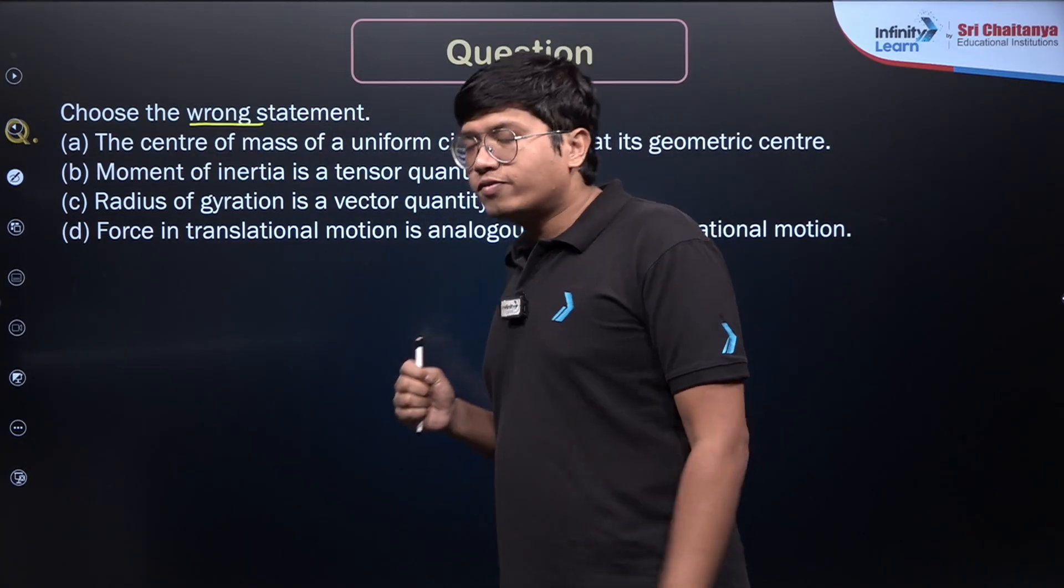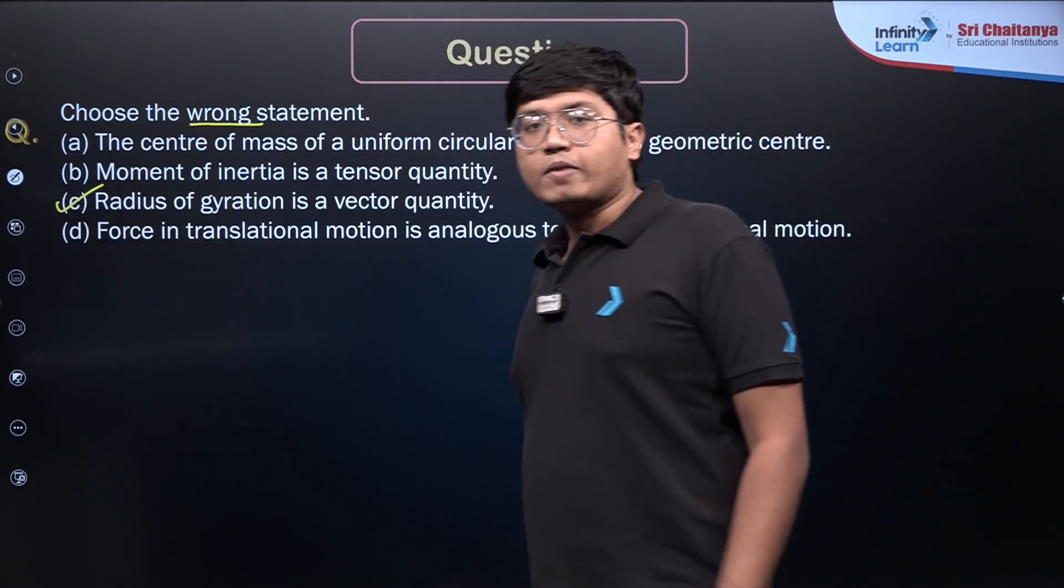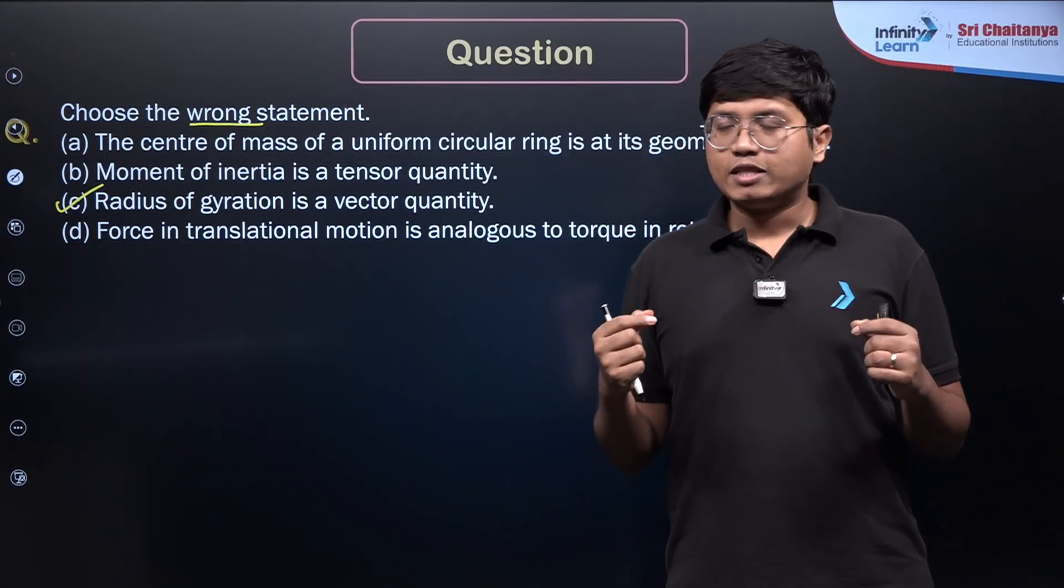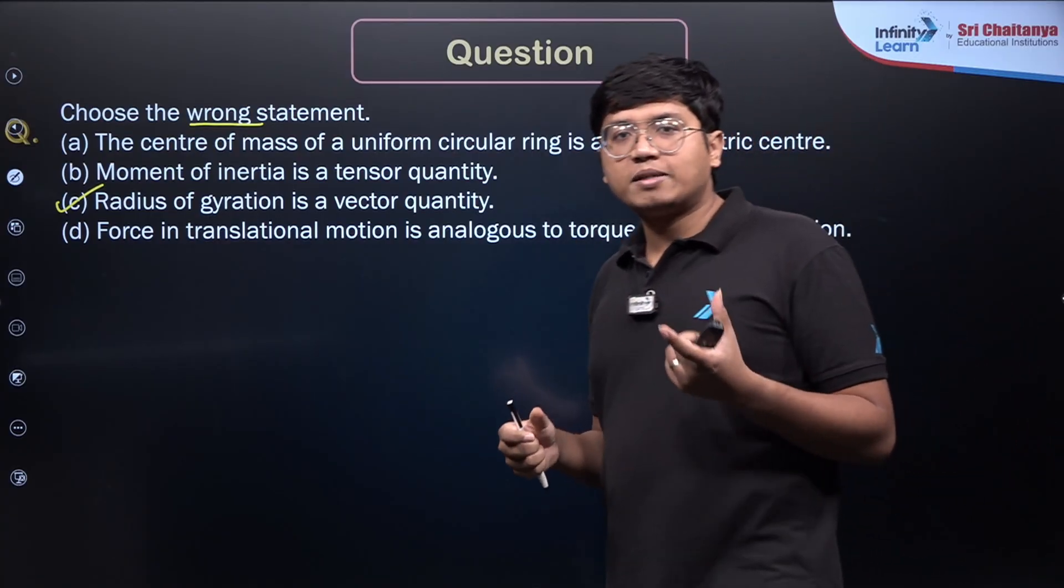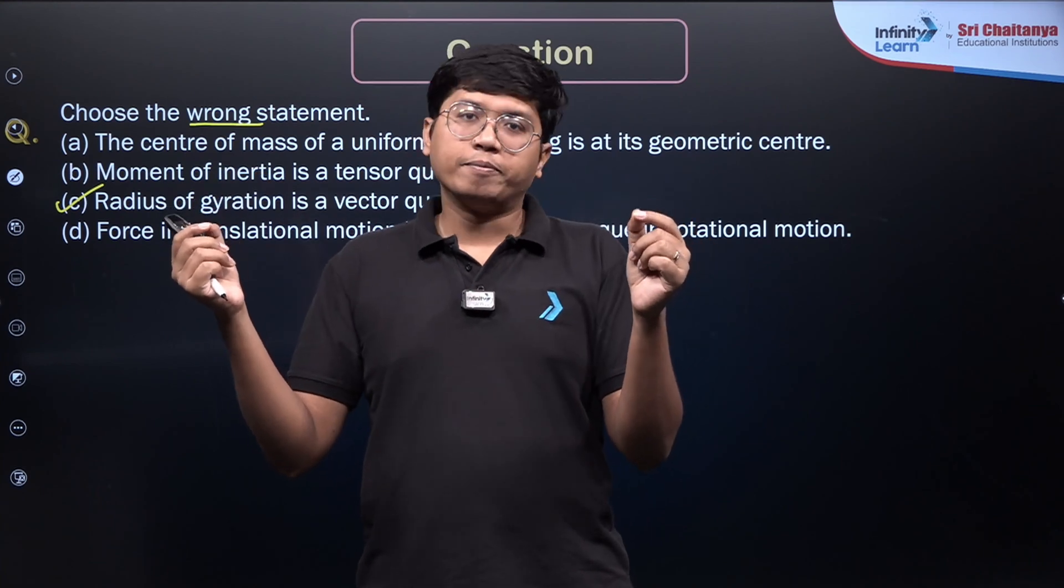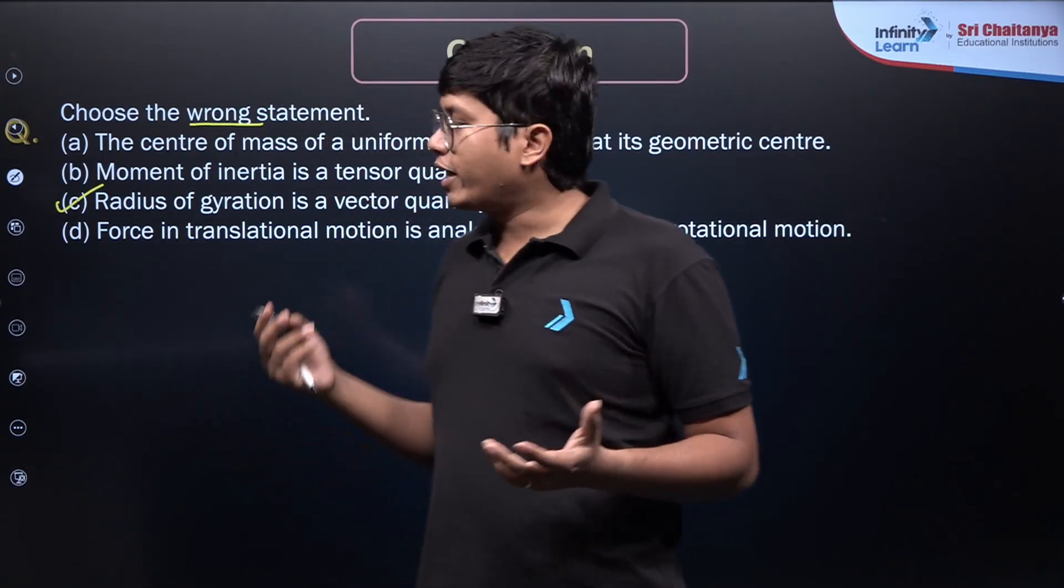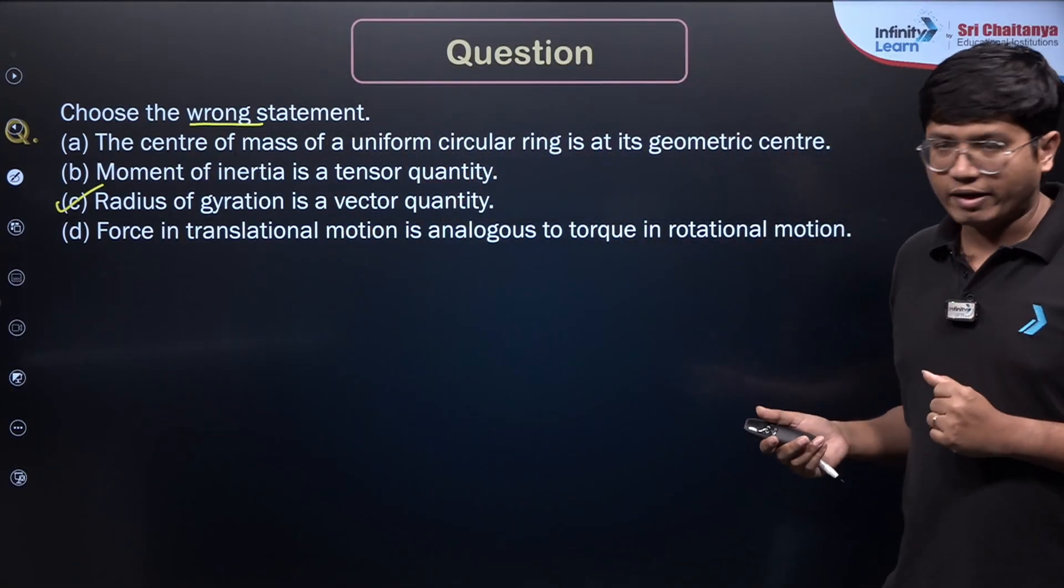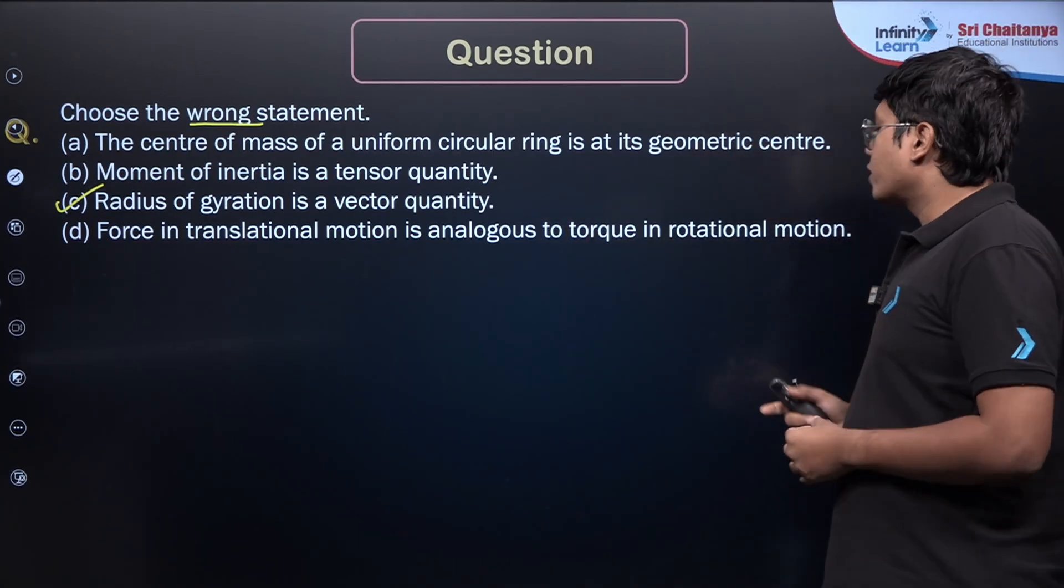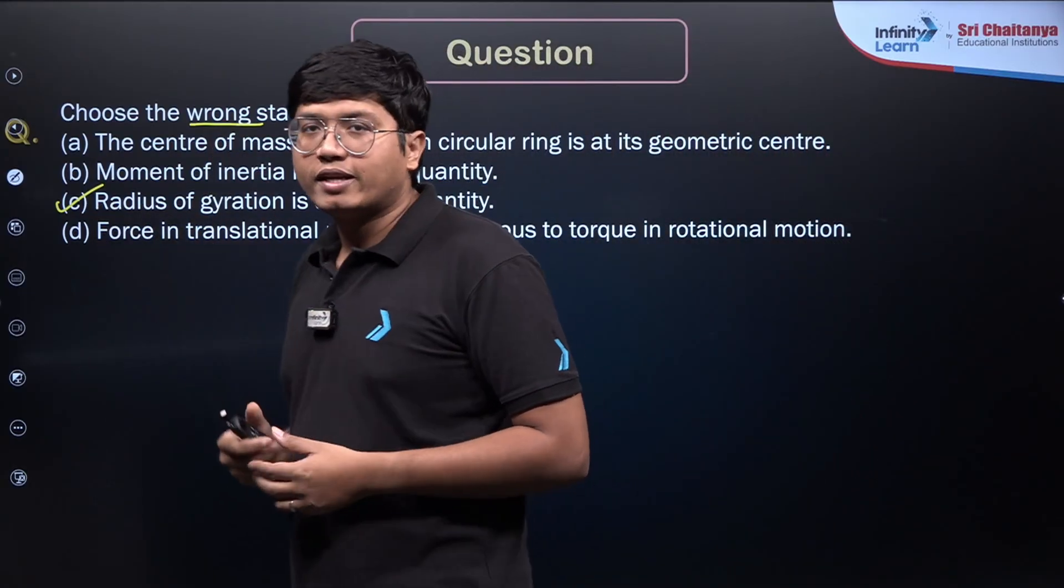Next, we have the radius of gyration is a vector quantity. This is the incorrect statement. Because radius of gyration only has a fixed length; it does not have a fixed direction. The purpose of radius of gyration is very similar to a center of mass: if I assume it to be a point mass, where should it be? It doesn't matter if it's on this side of the axis or the other. So radius of gyration is a scalar quantity, not a vector quantity. The fourth one is force in translational motion is analogous to torque in rotational motion. Yes, that's also a correct statement. So the wrong statement is option C.